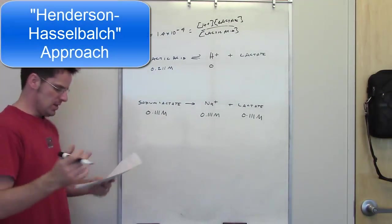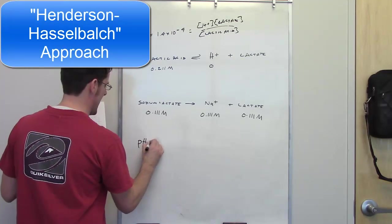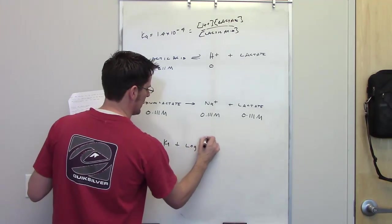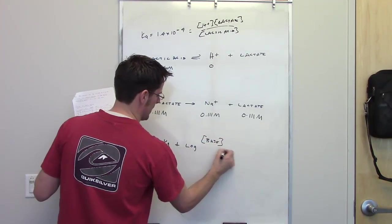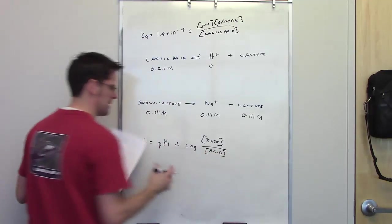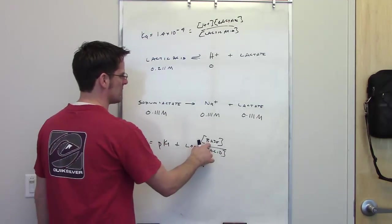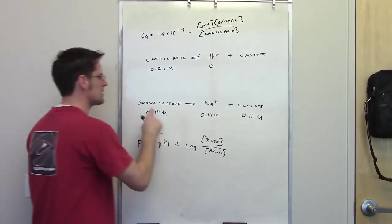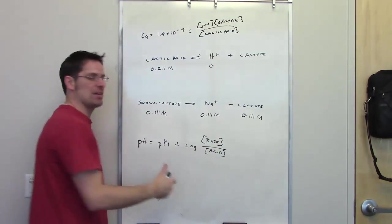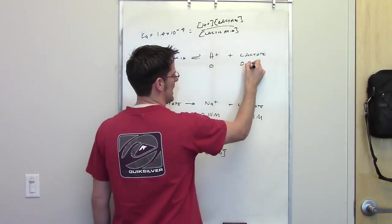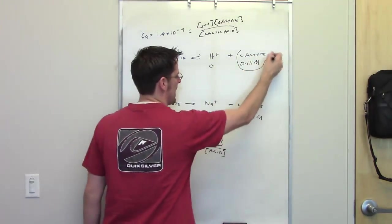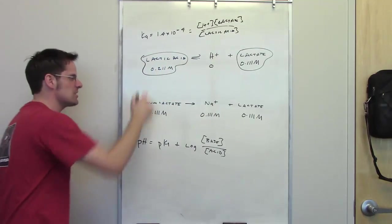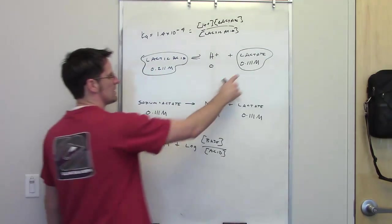Here's the Henderson-Hasselbalch approach. The Henderson-Hasselbalch equation says that the pH at equilibrium is going to be equal to the pKa plus the log of the conjugate base concentration divided by the conjugate acid concentration. Let me explain what this stuff means. First of all, what is the conjugate base of our acid? Here's lactic acid. Its conjugate base is lactate. Now, because I've added the source of lactate, I have common ion. I've got 0.11 molar lactate at initiation. So this is the conjugate base, and that is its concentration at initiation. This is the acid itself, and that is its concentration at initiation. So what I do is I put these numbers in for their respective locations here.